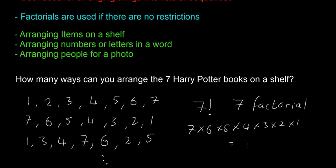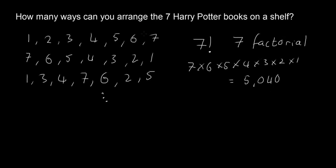If you put 7! or 7 × 6 × 5 × 4 × 3 × 2 × 1 into a calculator, you'll get this big number: 5,040. If you wanted to count all the different ways of arranging the seven Harry Potter books manually, you'd have to write out five thousand and forty different combinations.